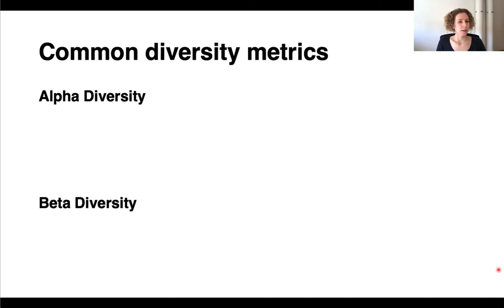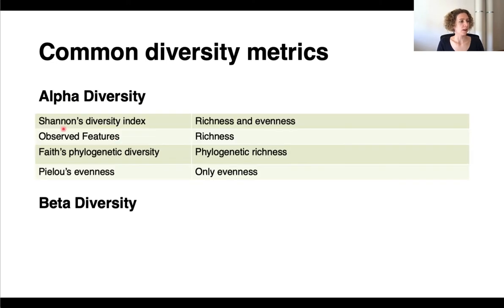So to look at alpha diversity, so that means how many features are observed in each community, we have Shannon's diversity index, which looks at richness and evenness, so it is weighted by abundance. We have observed features, which is the richness, so virtually only the number of different features present. We have Faith's phylogenetic diversity, so the phylogenetic richness, Pielou's evenness, which is only the evenness.